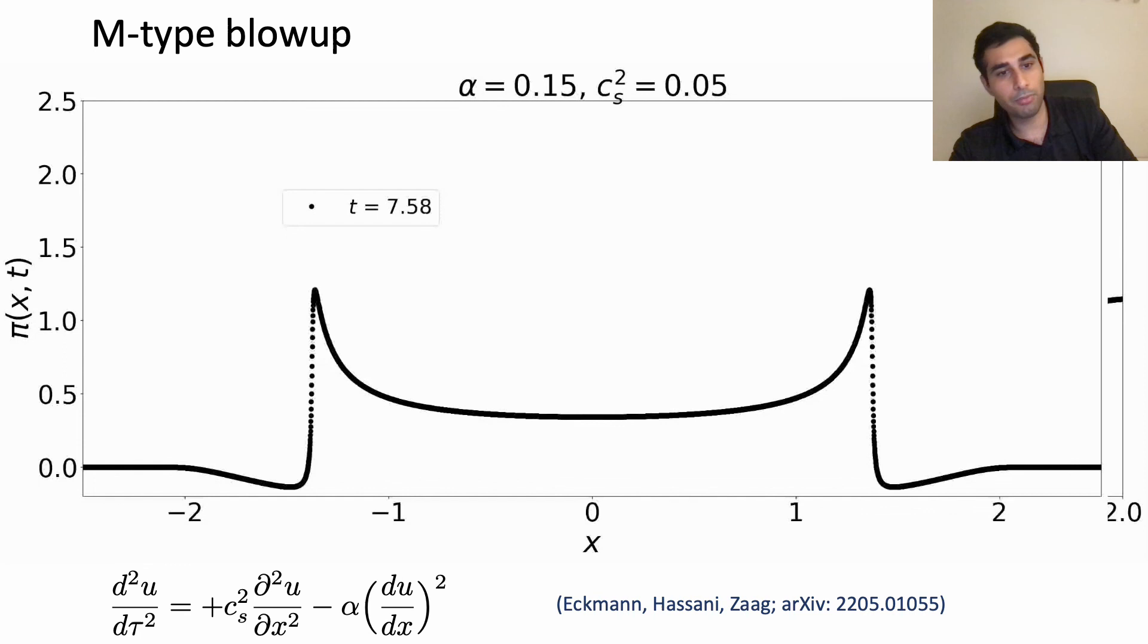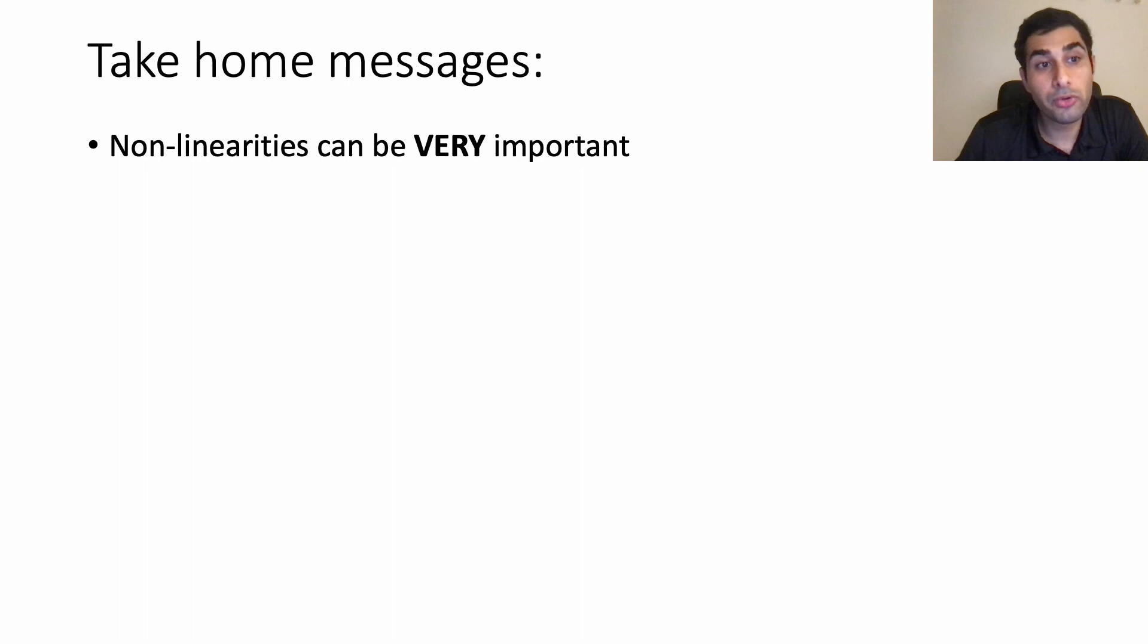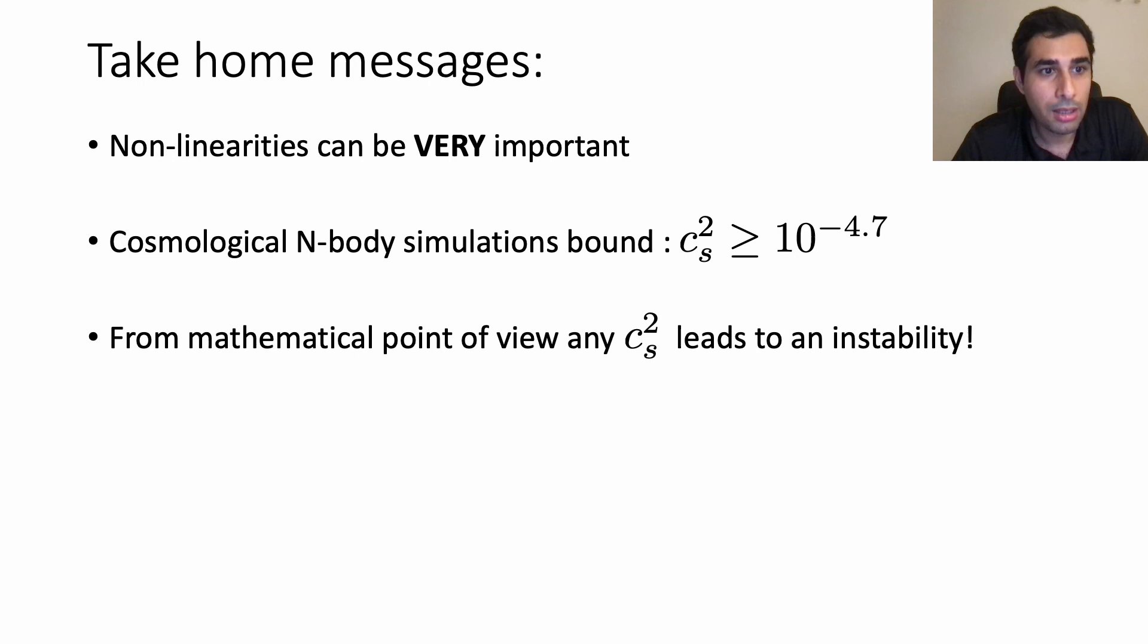Let me conclude with some take home messages. I've shown that non-linearities can become very important especially for the case of k-essence. Cosmological n-body simulations put bound of c_s² to be larger than 10 to the minus 4.7. However from mathematical point of view any c_s² can lead to instability. How can these two be connected? We don't know yet, it's an open question.